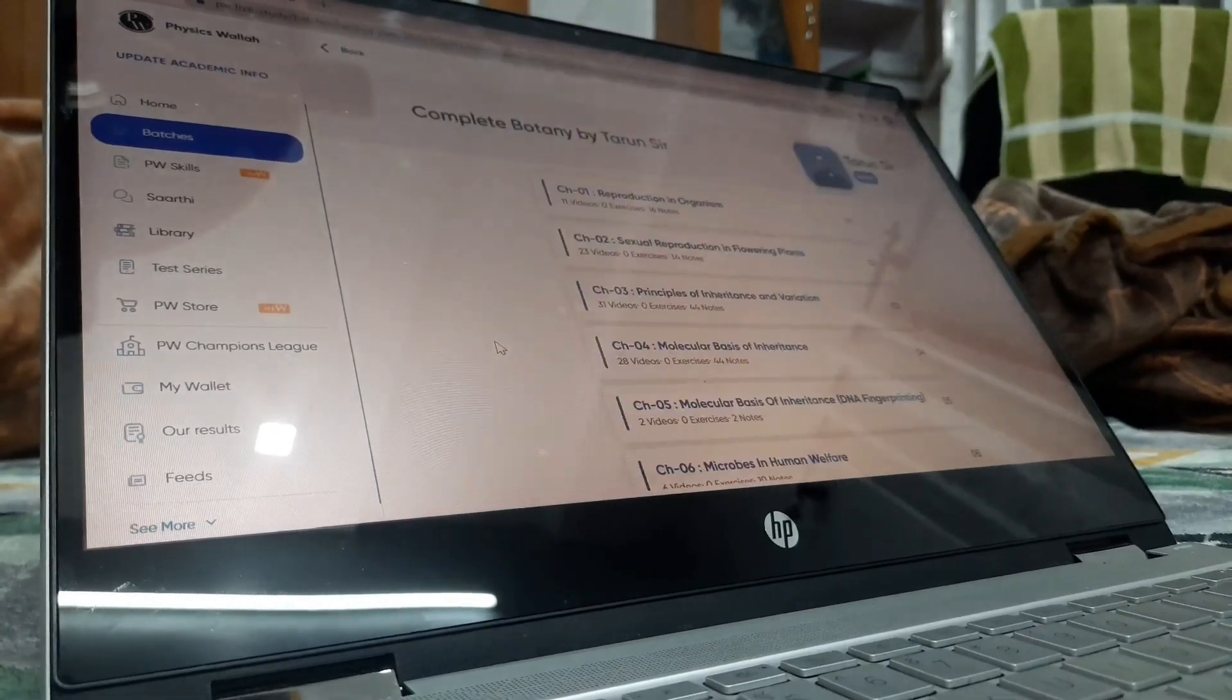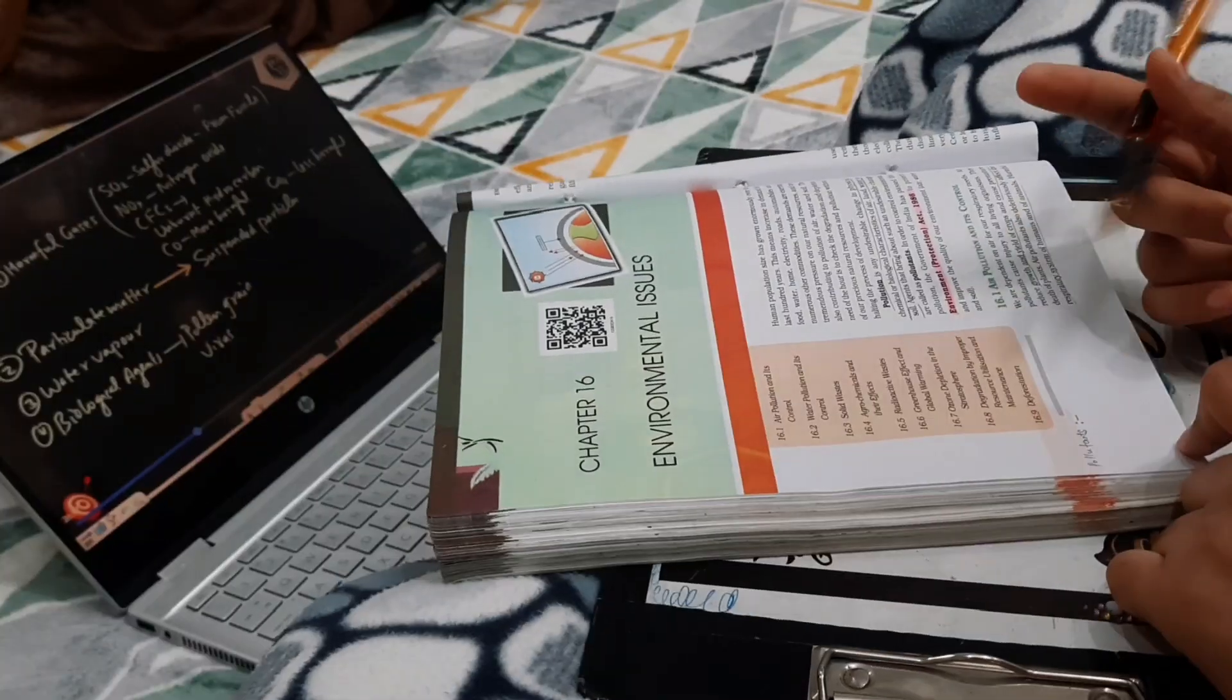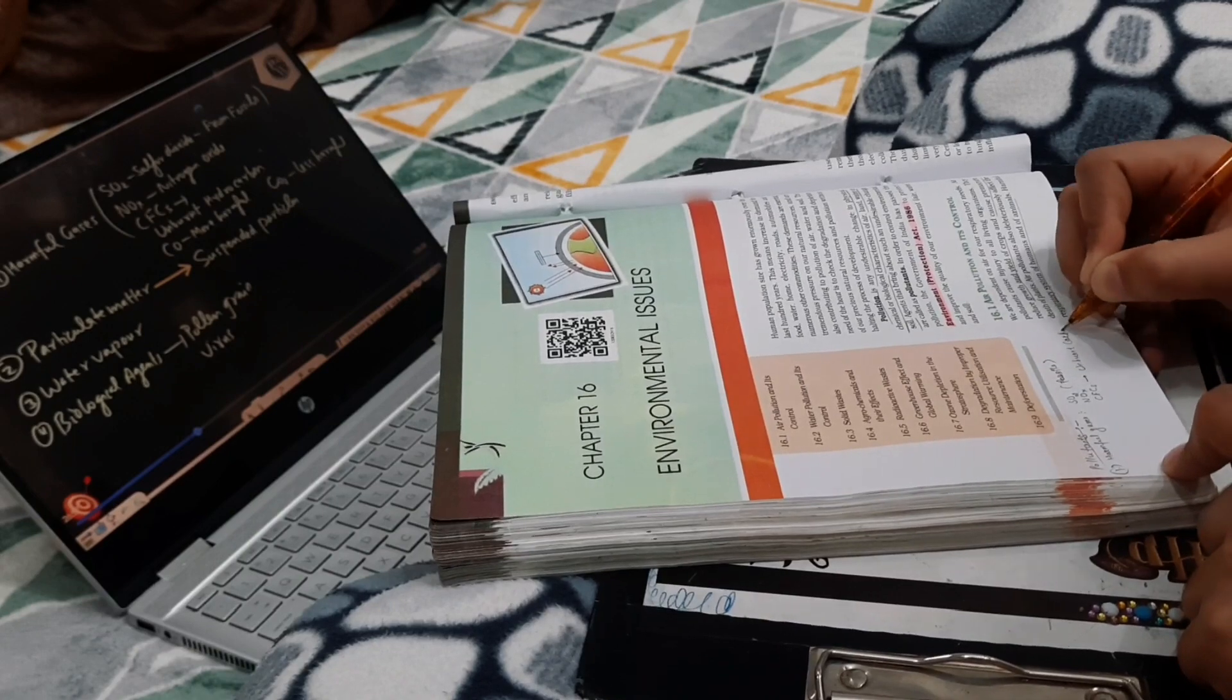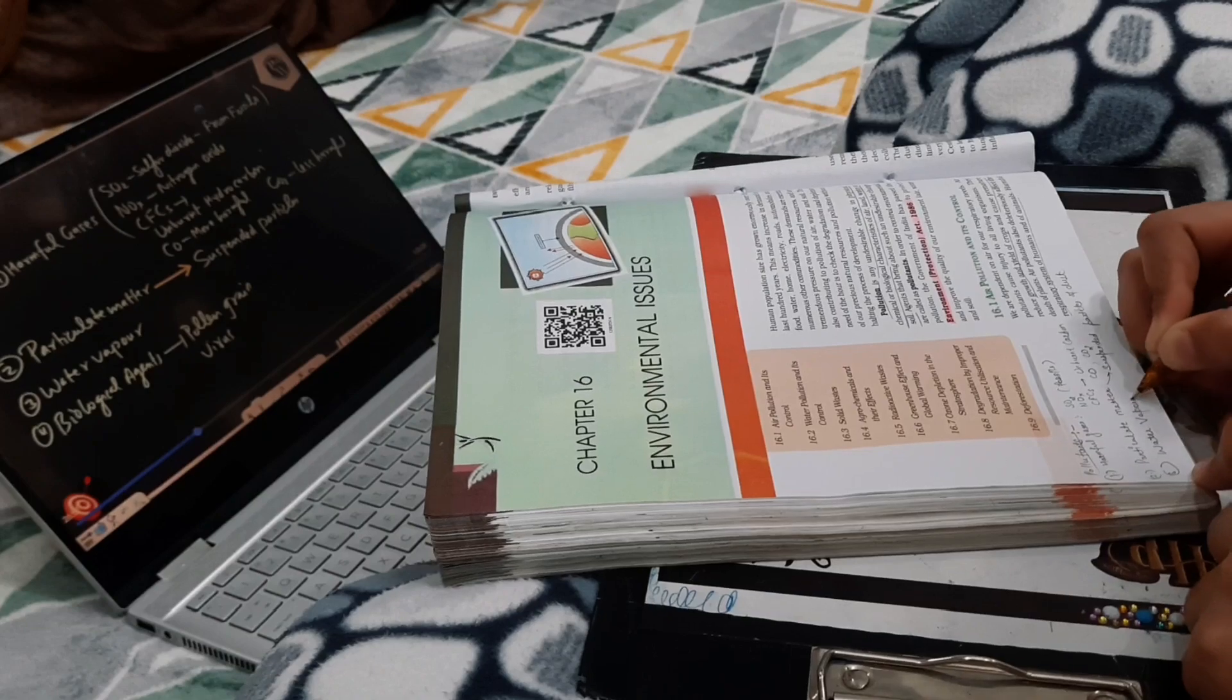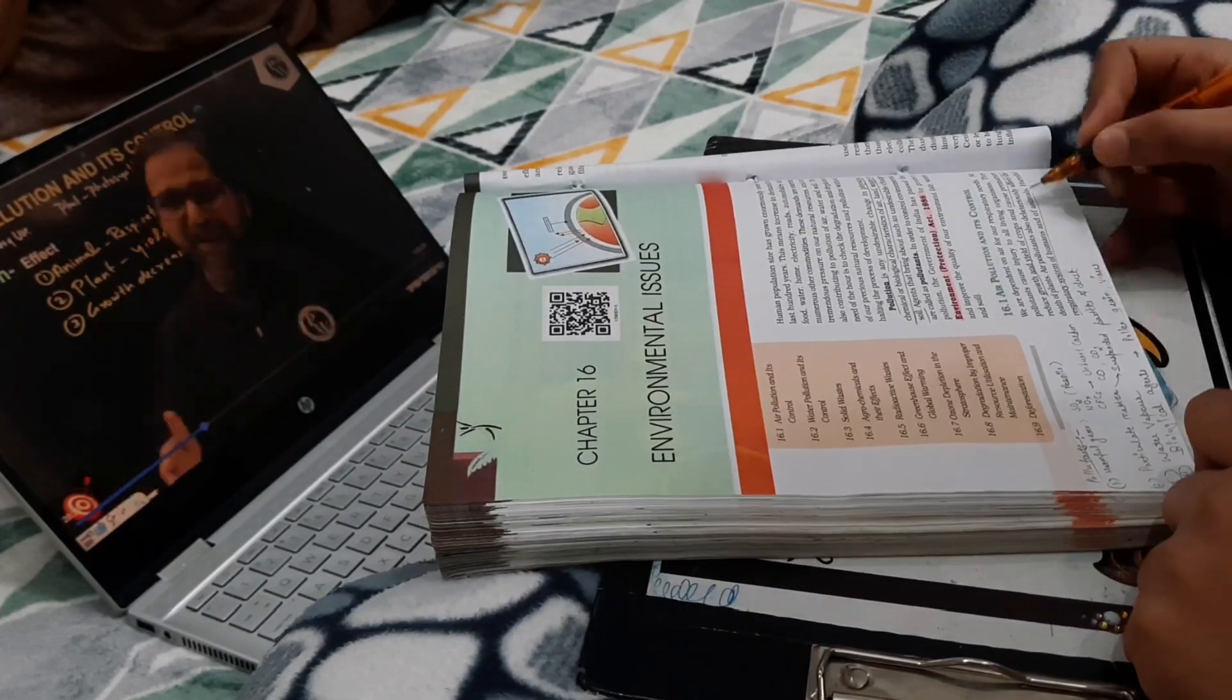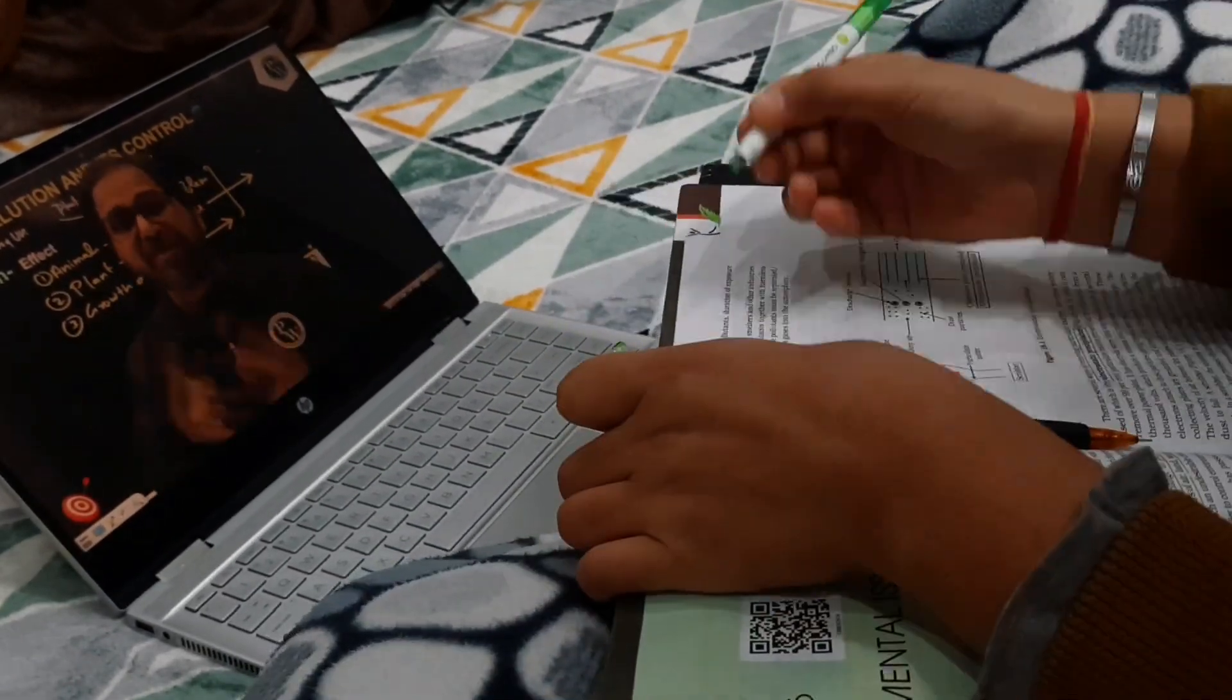Currently I am doing the environmental issue chapter of the botany section. Actually I forgot to do this chapter. I thought there was no such chapter and then when I saw the index I was like oh no. But this chapter is not so difficult, it's like a simple one and it has four lectures. So I am targeting to complete two lectures today only.